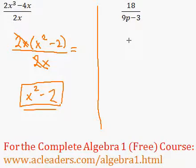What about this one? 18 over 9p minus 3. Well, we can actually factor out a 3 here from the bottom. 9p divided by 3 is just 3p, and negative 3 divided by 3 is just negative 1.